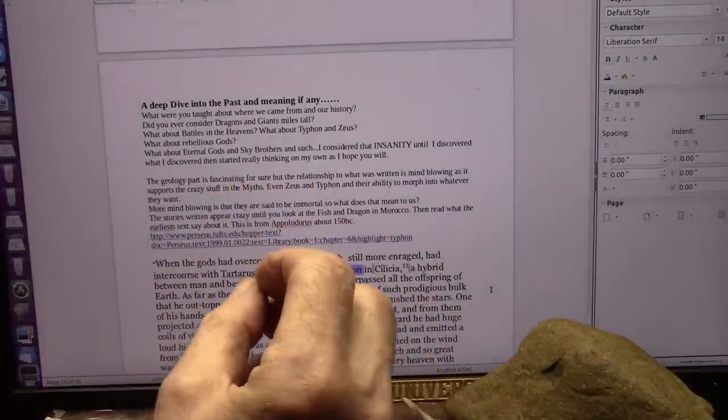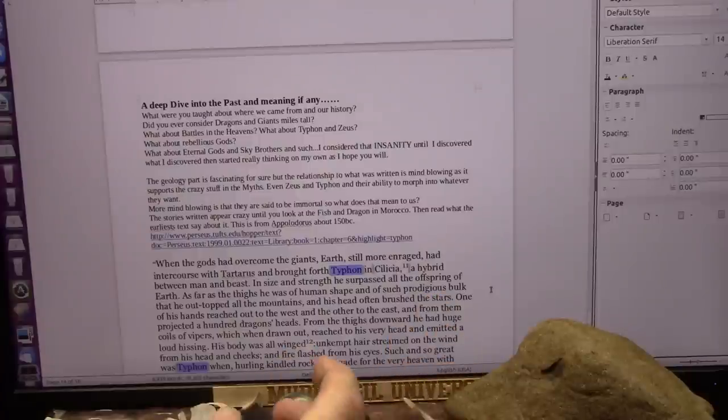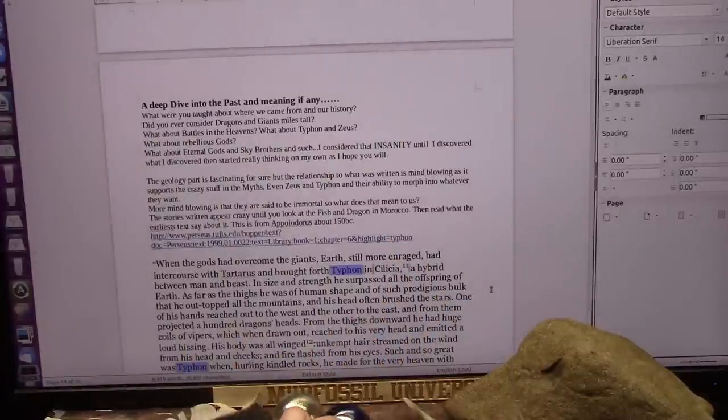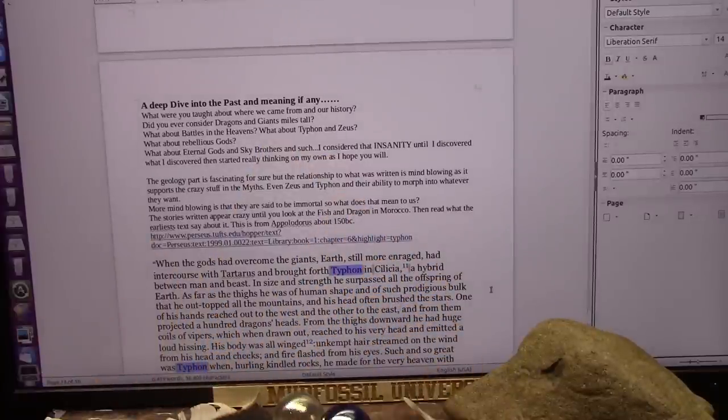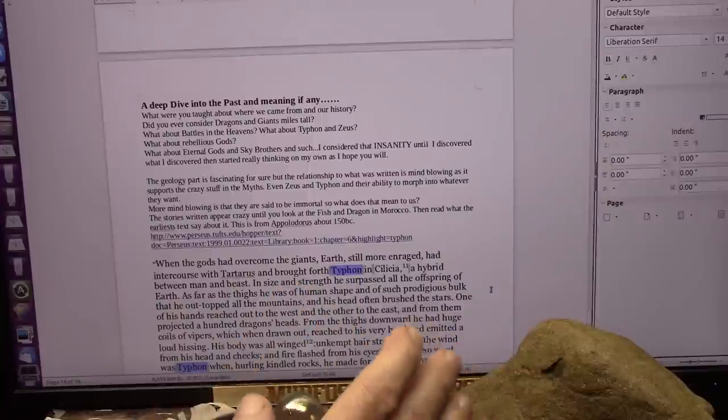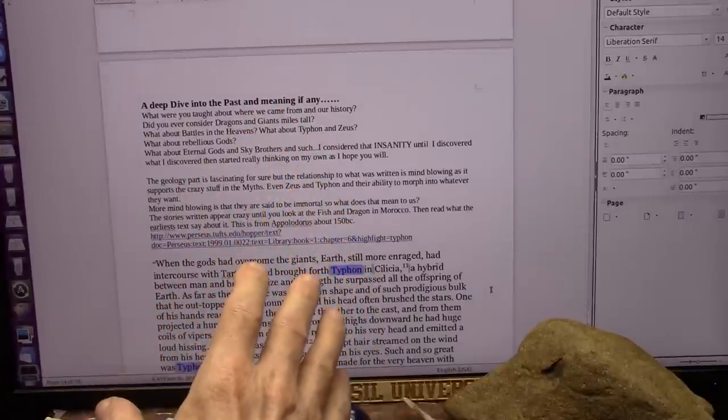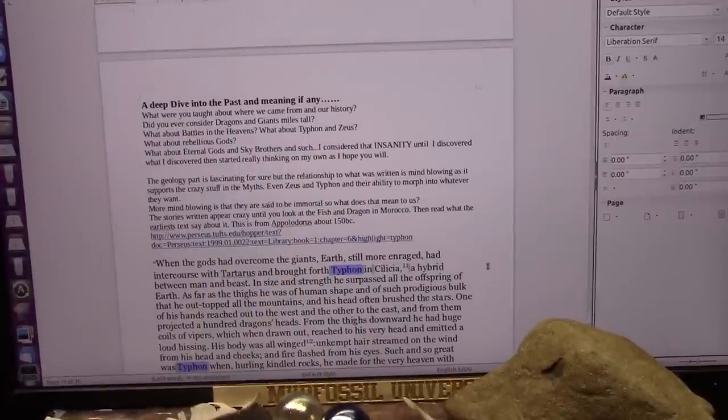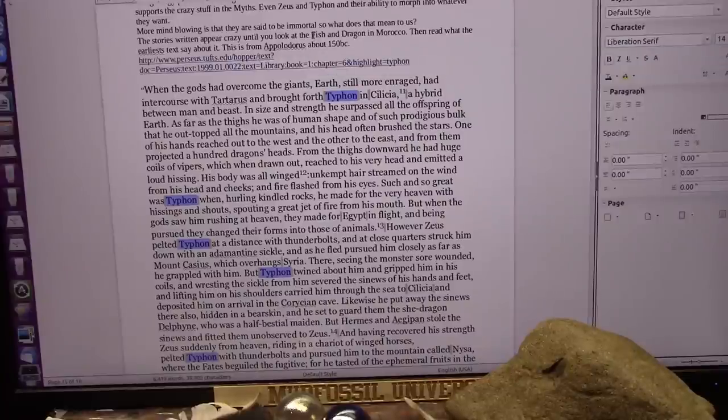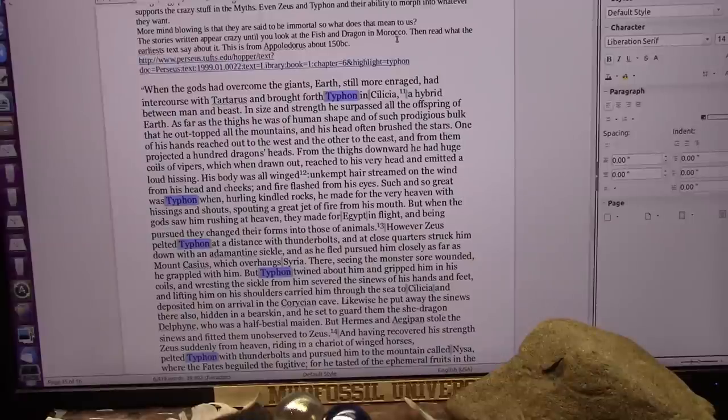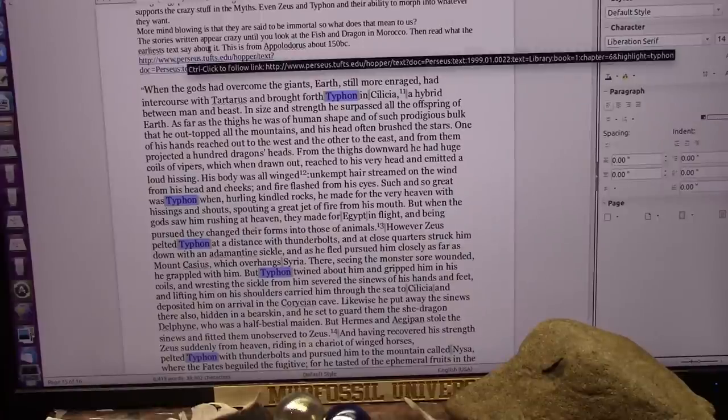And then once it hit our atmosphere, it compressed all the H's and O's, the hydrogens and oxygens, and turned them into H2O's, which is water. That's where all the floodwaters, well, not all of them, but a lot of them came from there. And they came down as hot, raining hot water, boiling hot water, and just wiped out everything on Earth, basically. The only ones that lived were the ones that were deep in caves, way up in the mountains, it appears. They say there's only seven people left, if you follow all the ancient texts in the Bible and so forth, Noah's flood. Well, this was Noah's flood, yes. I don't disagree with that, because everything I have is flat on one side and flawless on the other. The stories written appear crazy until you look at the fish and the dragon in Morocco and then read what the earliest texts say about them.